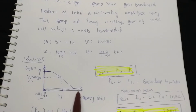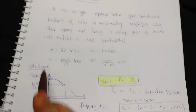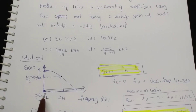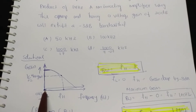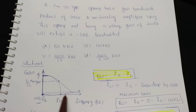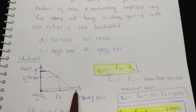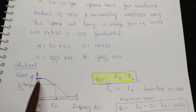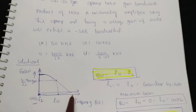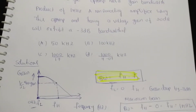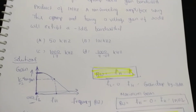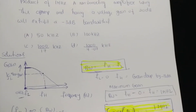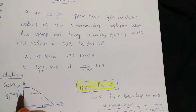Looking at the frequency response characteristics of an operational amplifier: the x-axis represents frequency and the y-axis is gain. The op-amp amplifies zero frequency (0 Hz) at maximum gain, and as frequency increases, the gain drops down. The gain-bandwidth product of this op-amp is 1 megahertz, as given in the problem.